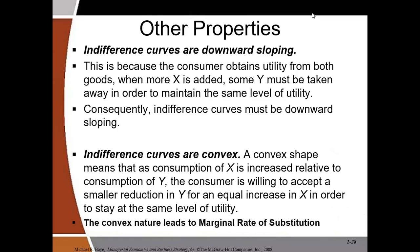Two additional properties of the indifference curve: first, it is downward sloping — if you want more Y you must reduce X, and vice versa, giving it a negative slope. Second, the indifference curve is convex in nature, which follows directly from the property of diminishing marginal rate of substitution.